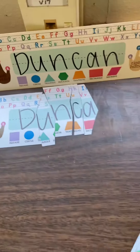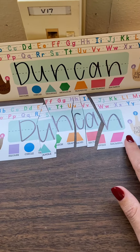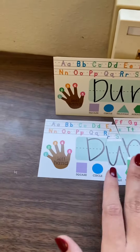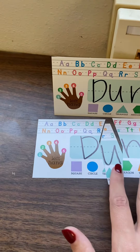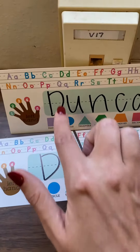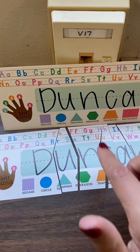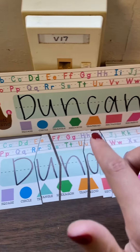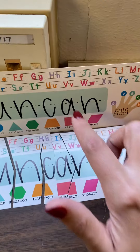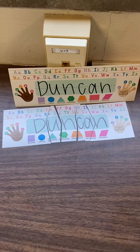Oh, and then the last letter is N. And there's my name puzzle — all the letters are matched up. So we have D, U, N, C, A, N — for Mrs. Duncan.